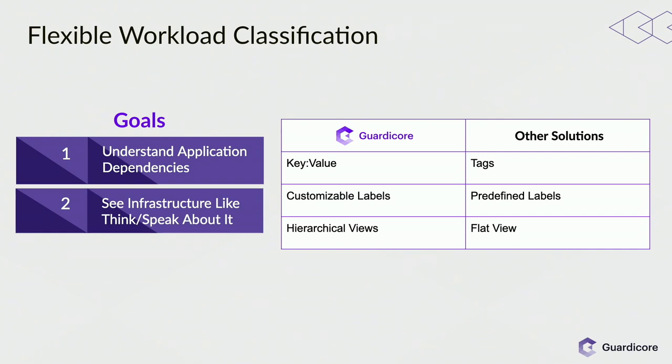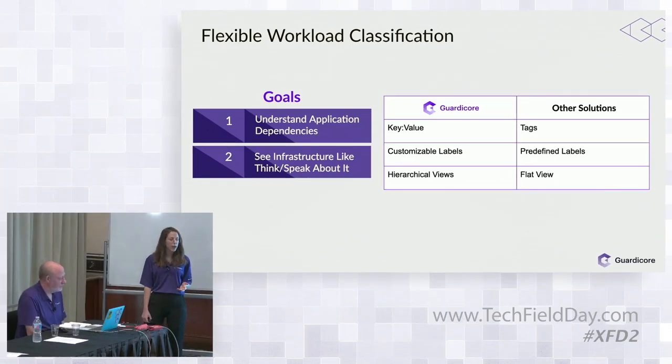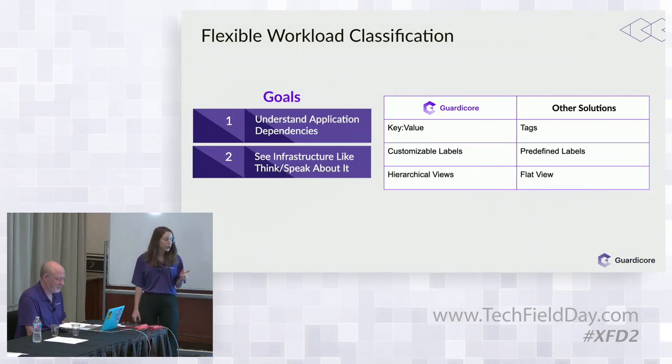On top of that we add flexible grouping for context — labeling. We started with mapping everything and then add context so you can visualize your data center in the way you speak about it. For example, if you have zones within your environments, we enable you to view your data center in a hierarchical view of zones. We also support the classic view of roles within applications within environments. It's completely customizable — from geographical location to the owner of the server so you know who to contact when creating a policy.